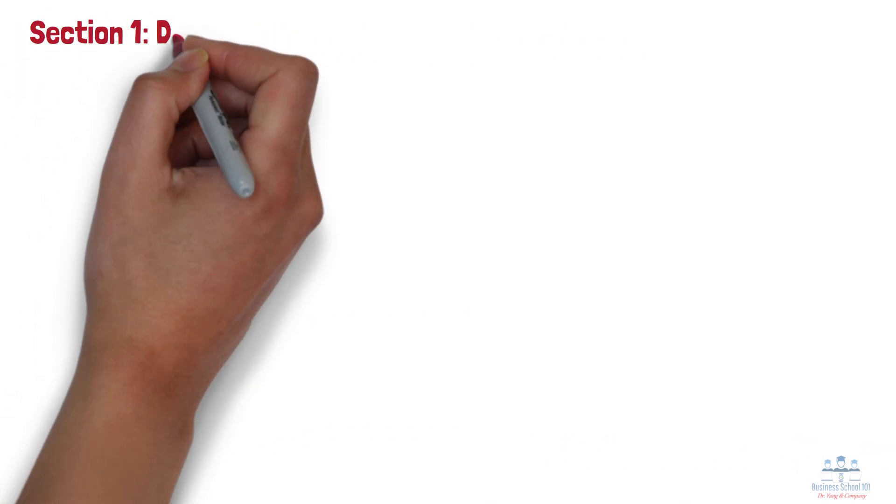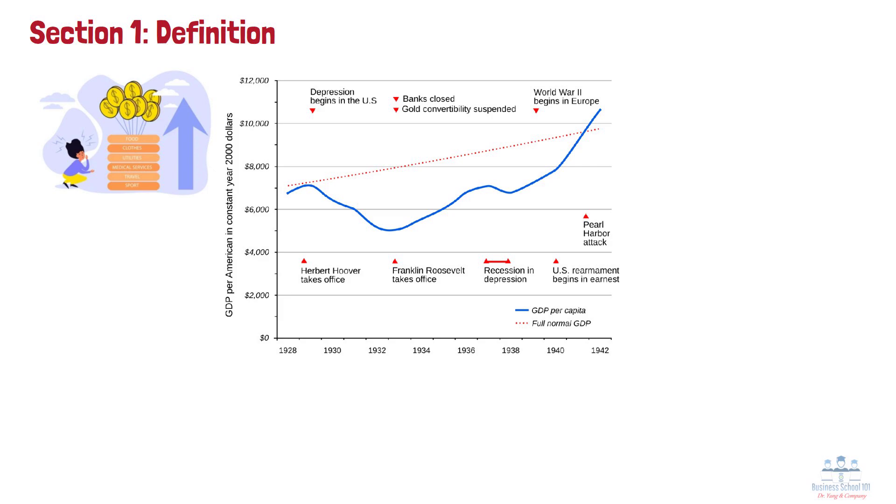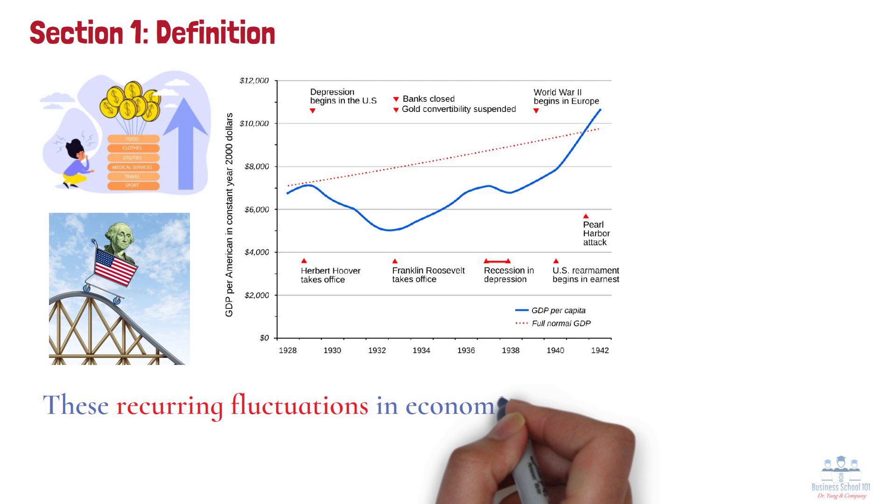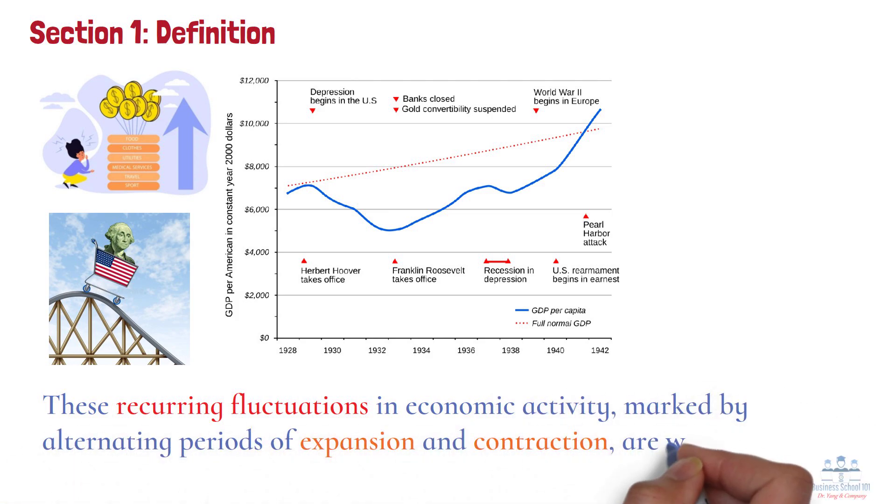Section 1: Definition. While America's standard of living has increased dramatically over the past century, it hasn't been a smooth ride up. For instance, during the early 1930s, real GDP per capita actually fell for several years in a row. Since the early 19th century, the US economy has been riding this economic rollercoaster of ups and downs. These recurring fluctuations in economic activity, marked by alternating periods of expansion and contraction, are what we call business cycles.